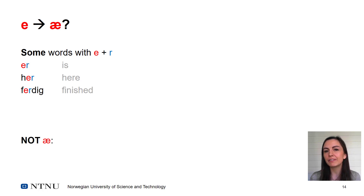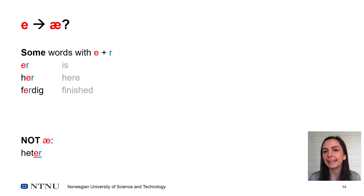Note that this does not apply when it is a grammatical ending with e and r. For example: heter, jenter.